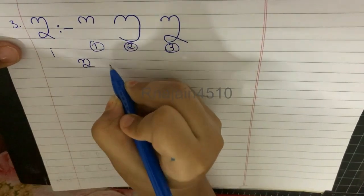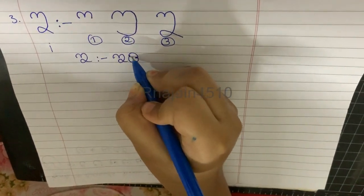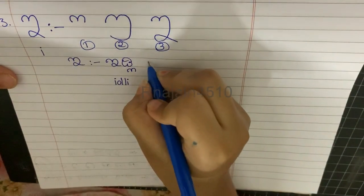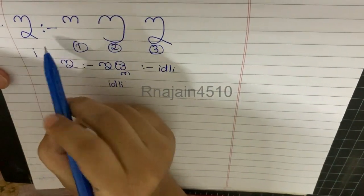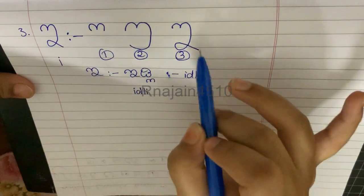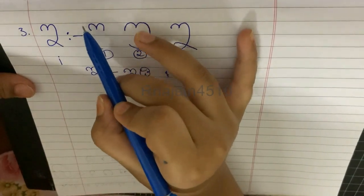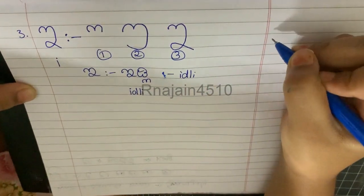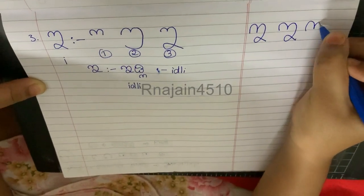E for Idli. The pronunciation is Idli, and the meaning in English is also Idli. The third Swaragalu in Kannada is E, with three steps: first M but not a standing line, then C on the right side, then a cross mark. Now we will practice E.